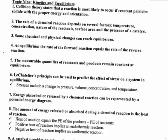We should know collision theory, which states that a reaction is most likely to happen if particles collide. We should know the rate of a chemical reaction depends on several factors: temperature — if you increase the temperature, you increase the rate of a reaction. If you increase the concentration, if you increase the surface area, if you have a catalyst, all of these things will increase the rate of a chemical reaction.